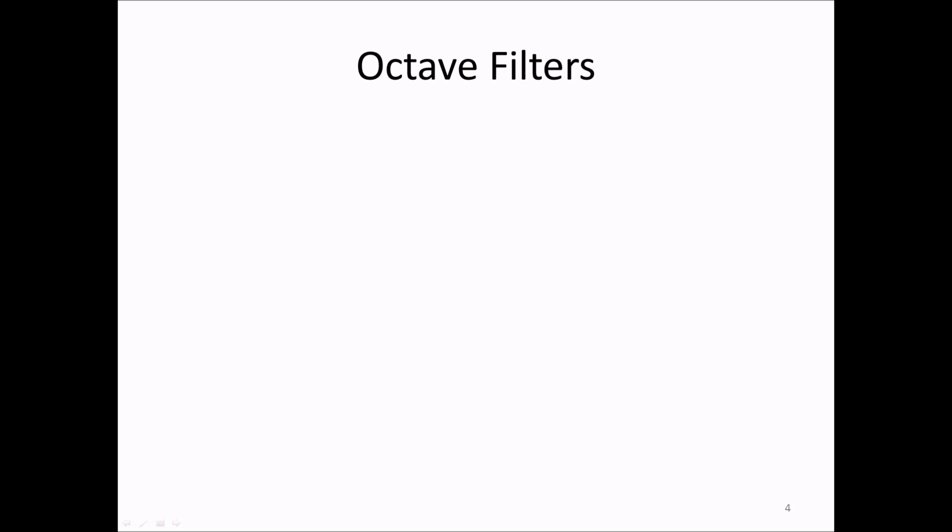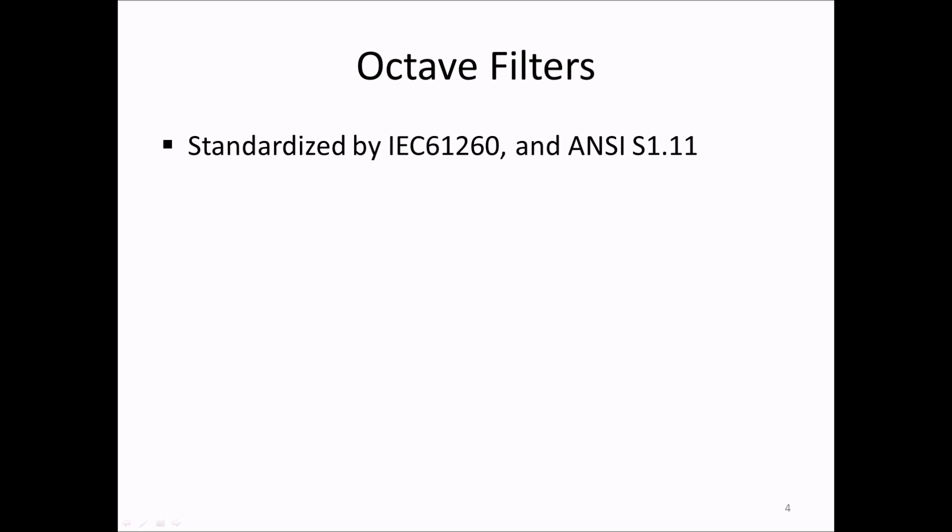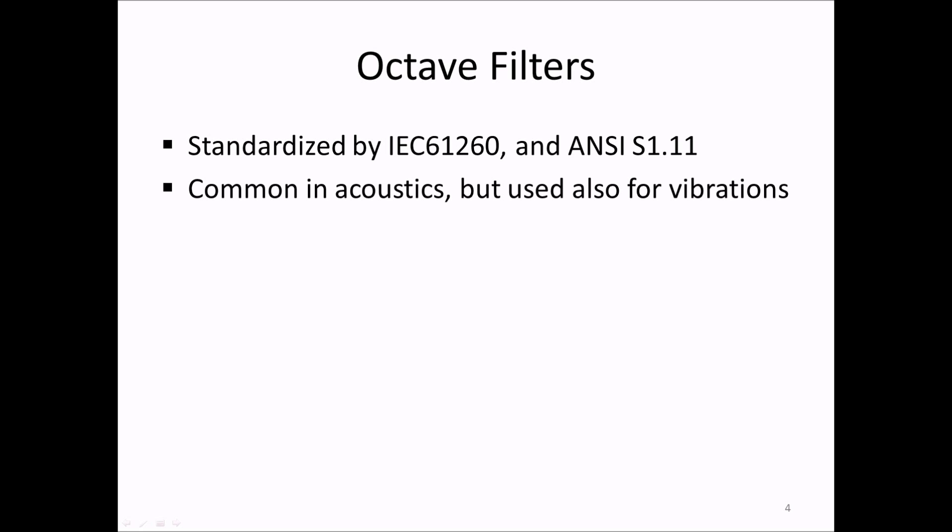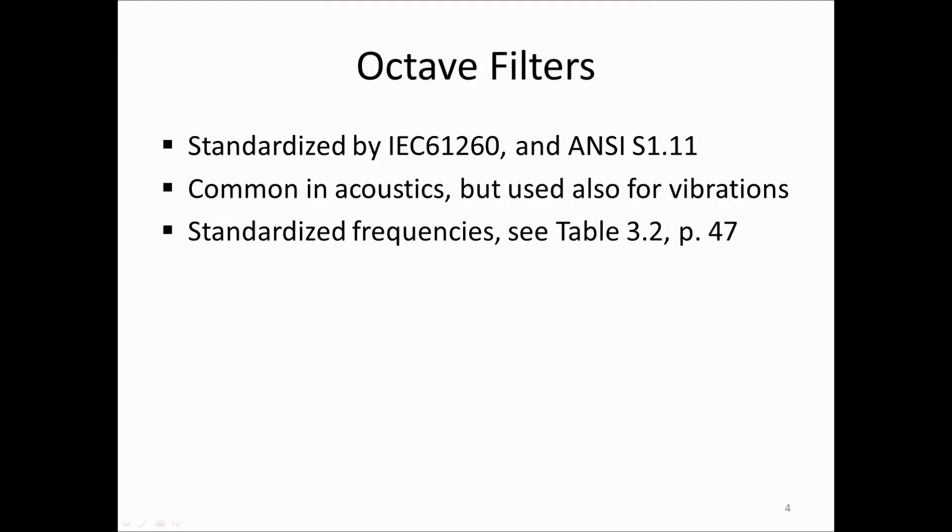1-over-N octave filters are standardized by the IEC standard 61260, or in the US, the ANSI standard S1.11. These two standards are harmonized so the filter characteristics are identical under both. These filters are particularly common in acoustics but are also sometimes used for vibrations. 1-over-N octave filtering is done by applying standardized digital bandpass filters to the data and analyzing the output of each bandpass-filtered sequence. The center frequencies are standardized and typical values are found in the book.